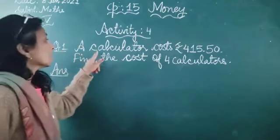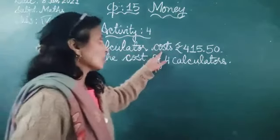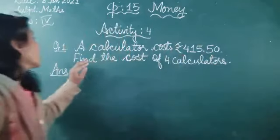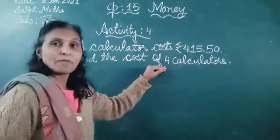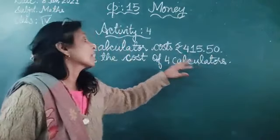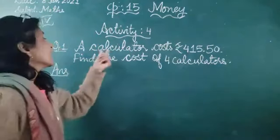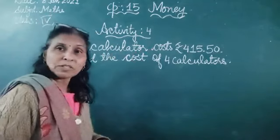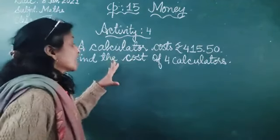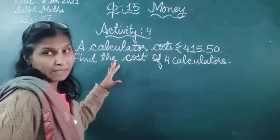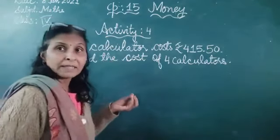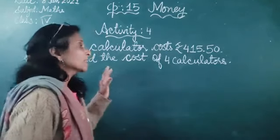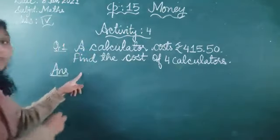Question number 1. A calculator costs rupees 415.50. Find the cost of 4 calculators. Read the question carefully. The cost of one calculator is given. We will find out the cost of 4 calculators. So what do we do? We multiply. When the cost of one item is given and you find out the cost of more items, then we multiply it.